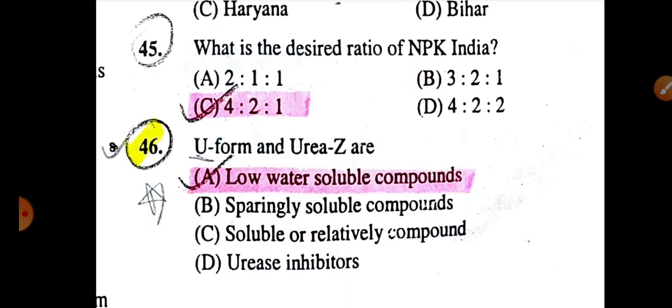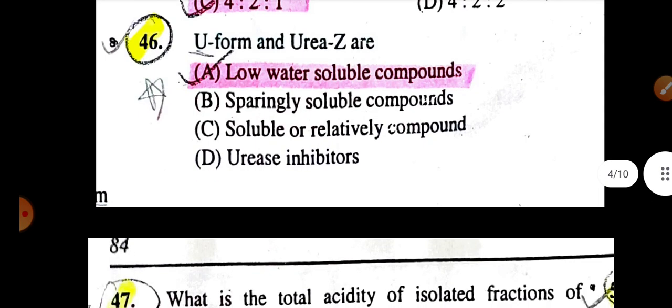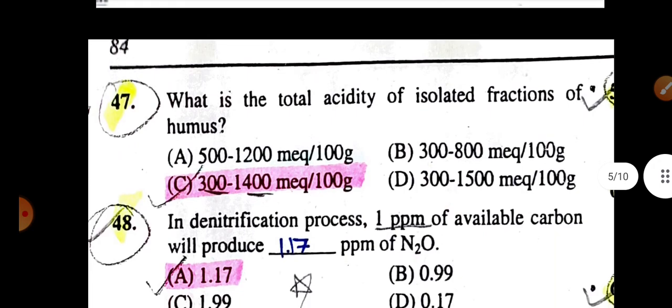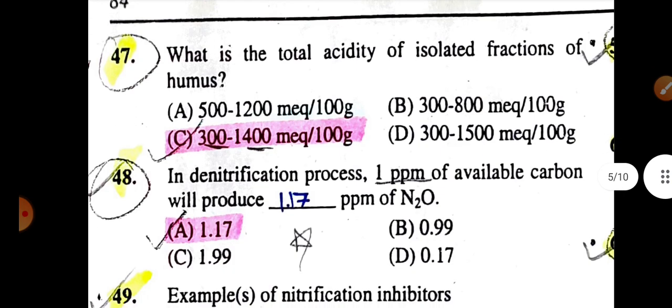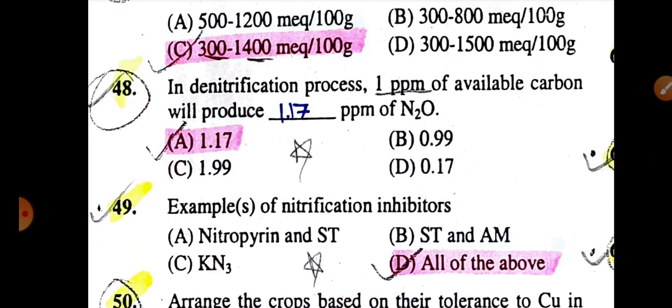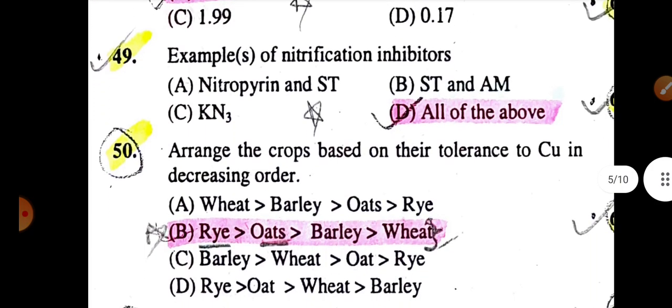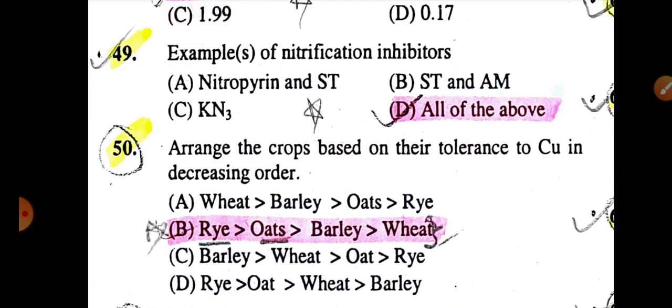What is the desired ratio of NPK in India is 4:2:1. U-Form and Urea-Z are low water-soluble compounds. What is the total acidity of isolated fraction of humus is 300-1400 mEq per 100g. The denitrification process: 1 ppm of available carbon will produce 1.17 ppm of nitrogen. Examples of nitrification inhibitors are all of the above: Nitrapyrin and ST, DCS, AM and KN3.